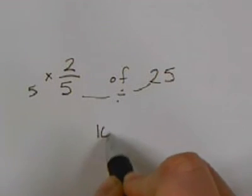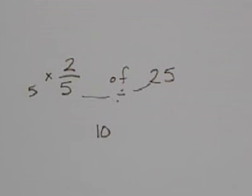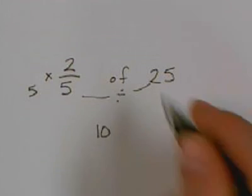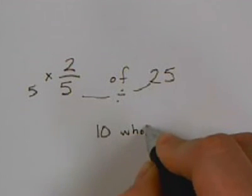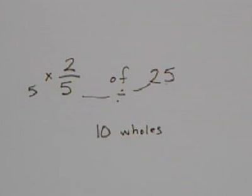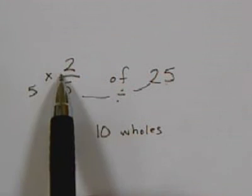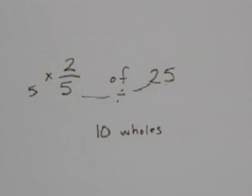So 2 fifths of 25 is 10. One thing that they need to understand is that 10 is not part of a fraction. 10 is 10 whole of my original 25. So 10 is 2 fifths of my original 25 whole.